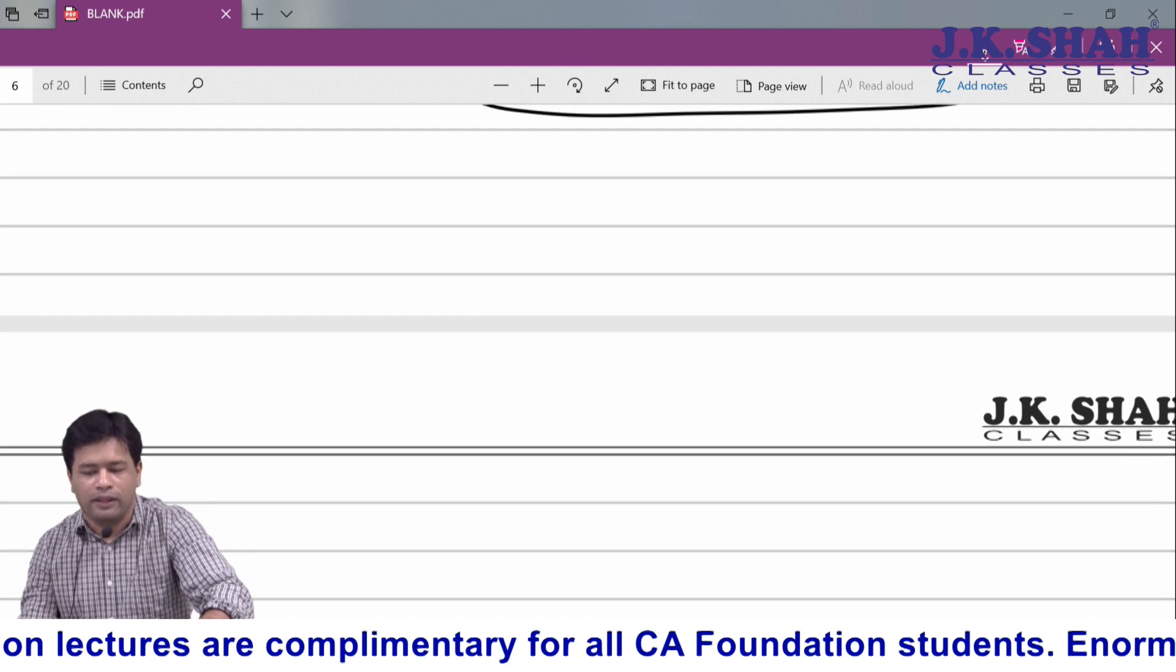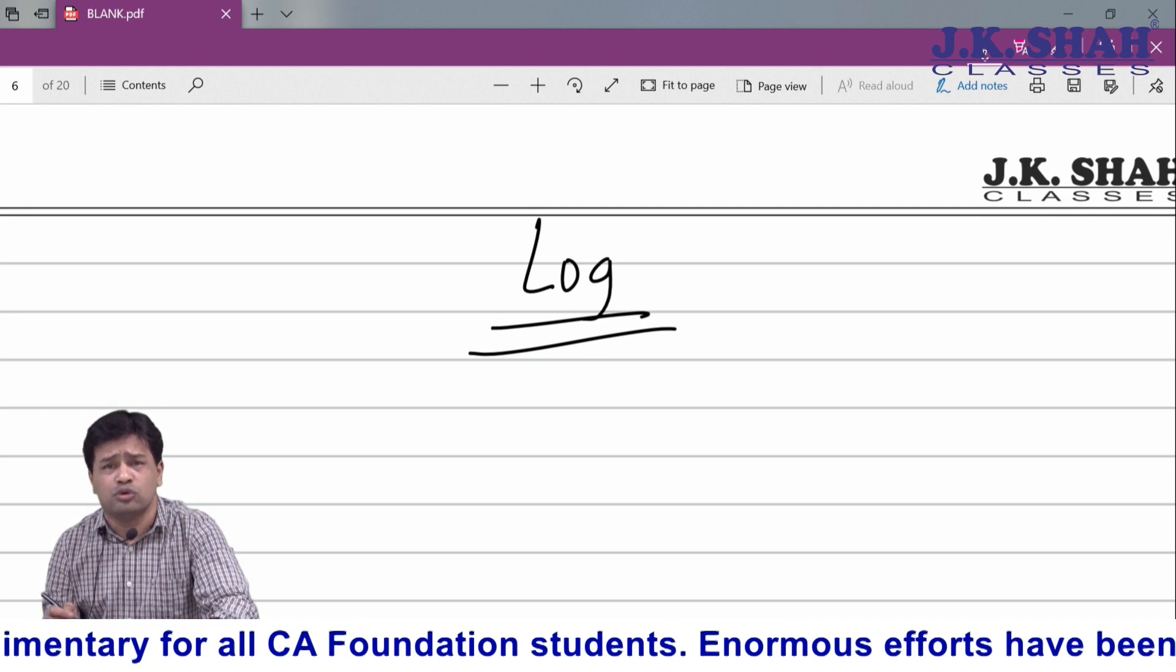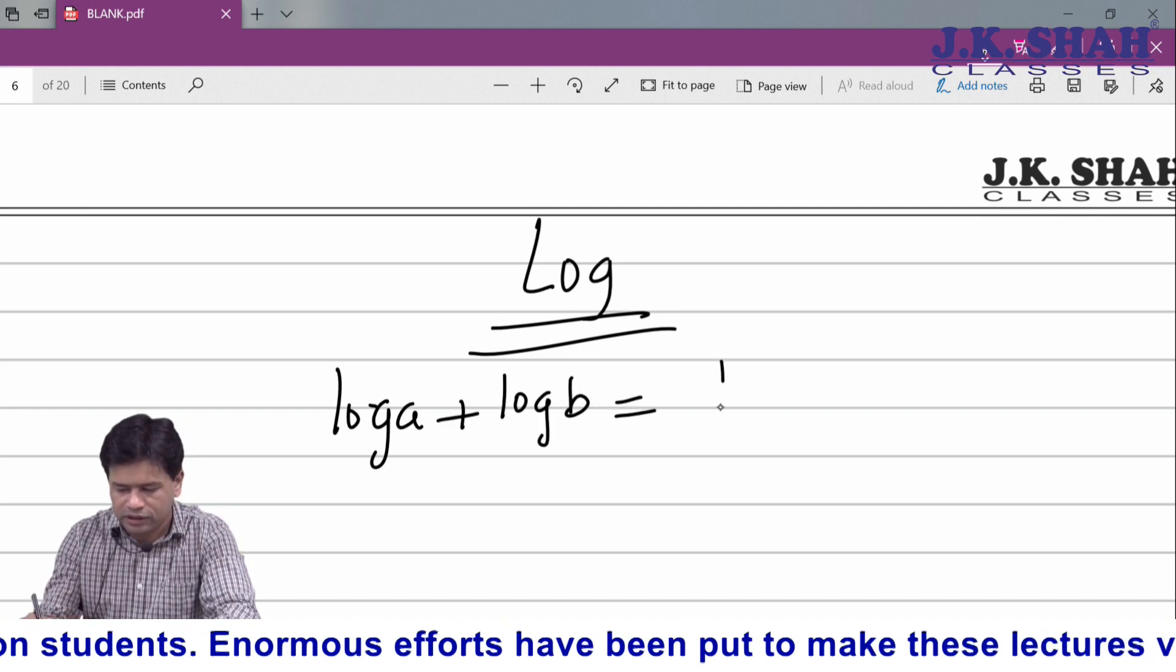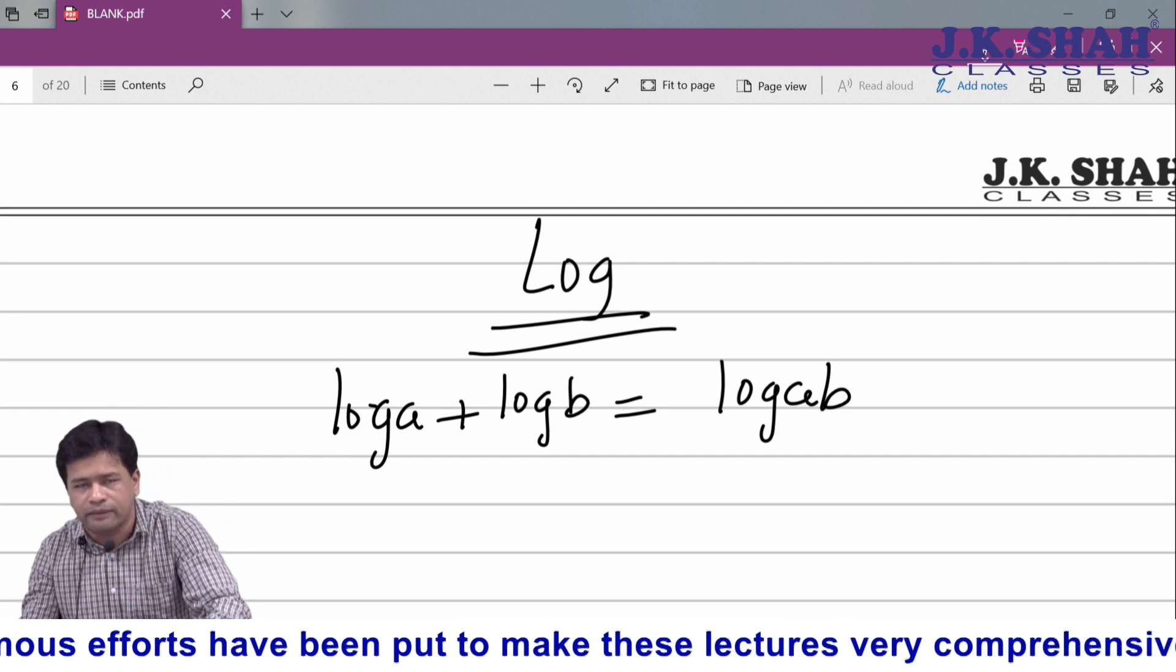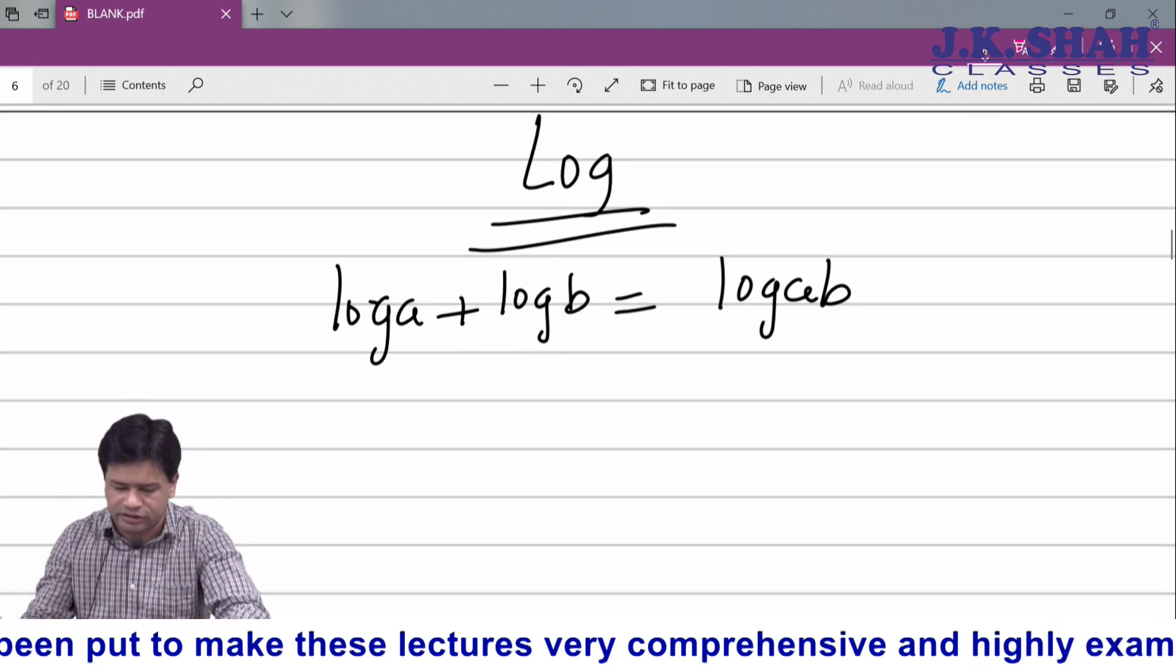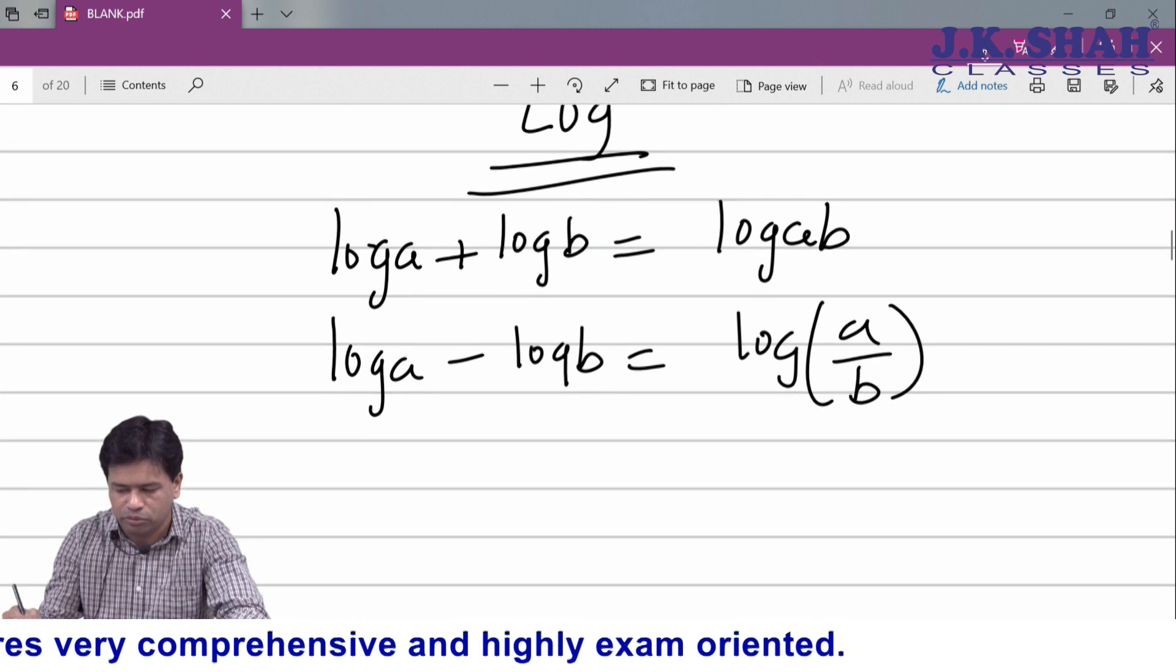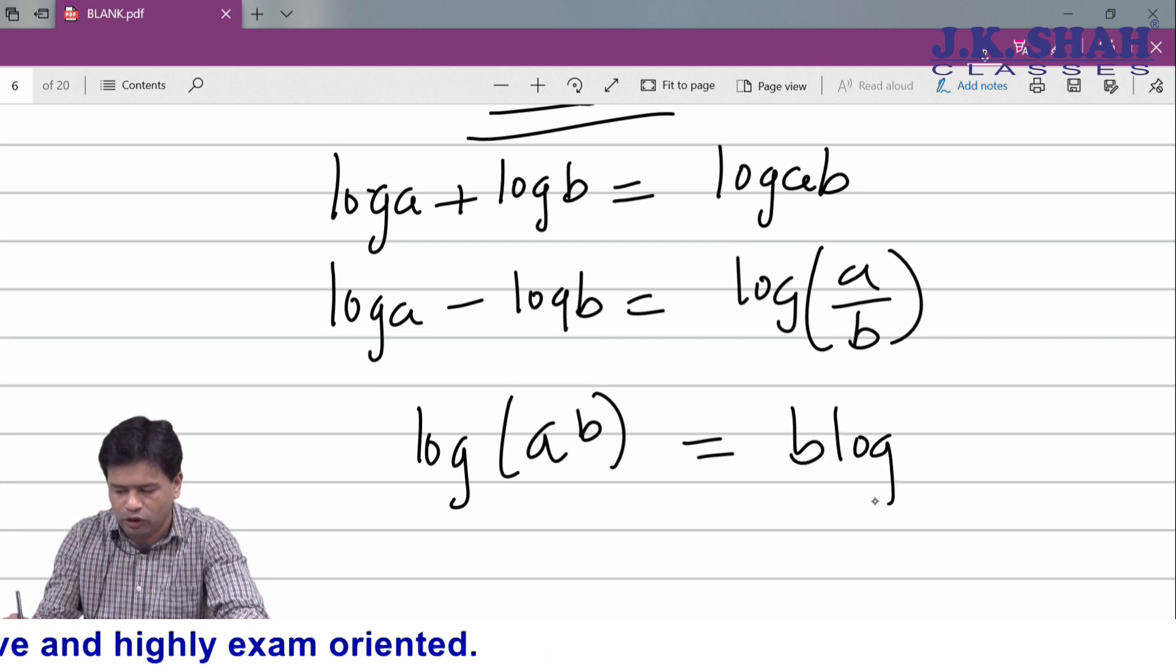Now we go to logarithm. In log, the most important thing is to remember the properties of log. Log a plus log b equals log of ab - plus becomes multiplication, and this property is applicable either way. Log a minus log b equals log of a upon b. Log of a raised to b equals b log a.